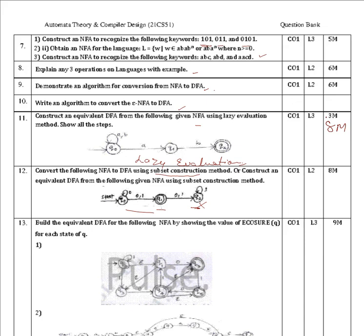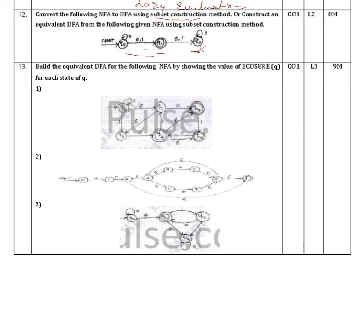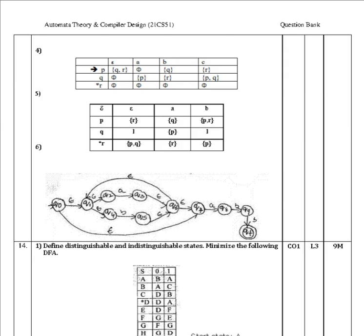These are some standard DFSM and NFSM construction problems from question papers. For epsilon-NFA problems, worth 8 to 10 marks, you must find the epsilon closure of each state in order to design the DFA. The same standard problems may be repeated in your exam, so you should try to solve them.